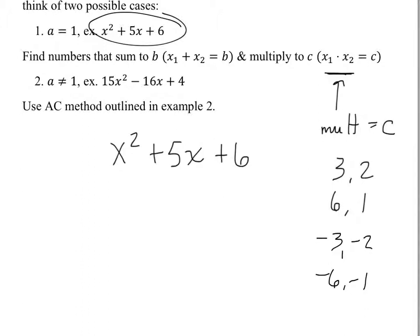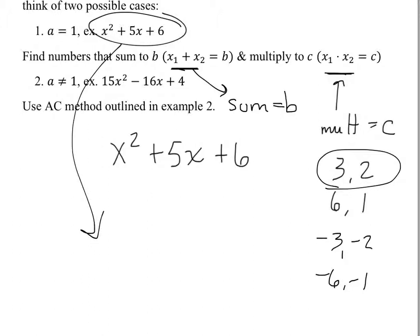We want to come up with two numbers from those choices that sum to equal whatever B is. Which of those four choices adds up to five? Only one of them does — three and two only. Three and two give you five. Be careful: negative three and negative two gives you negative five, not five. So it turns out that our factors come out to be x plus three and x plus two. In factoring this, it would be x plus three times x plus two.